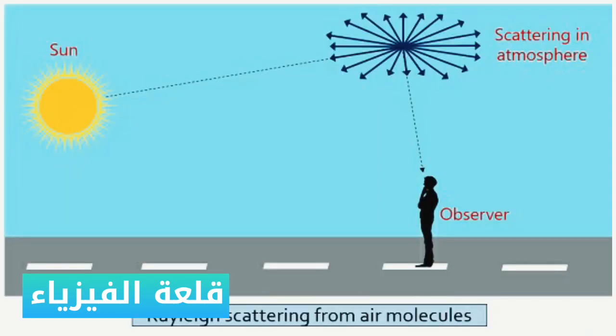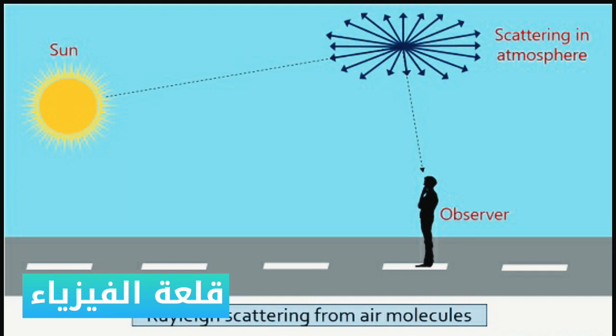Hence, in life, blue light is actually scattered by a factor of six times more than that of red.